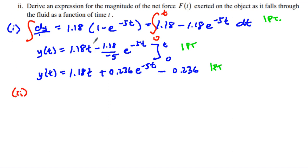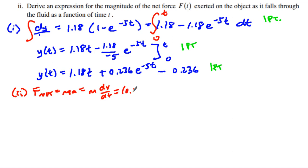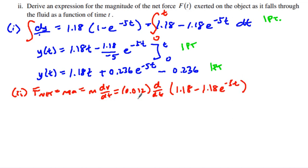Let's go to number two. It says: derive an expression for the magnitude of the net force. Net force equals mass times acceleration. Acceleration is the change of velocity over change in time. I have a mass of 0.012 kilograms, and I can take the derivative of the function 1.18 minus 1.18 e^(−5t).